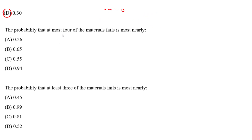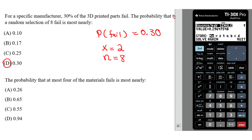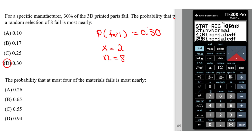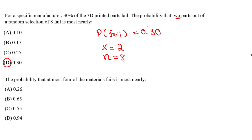Now this next one is more tricky: the probability that at most four of the materials fail is most nearly what? For an 'at most' question we want the cumulative probability. Go to Second, Distribution, and select binomial CDF — cumulative — because we want to combine the probabilities at zero, one, two, three, and four failures and add them all together. Click that, then go to the very last option and click All.